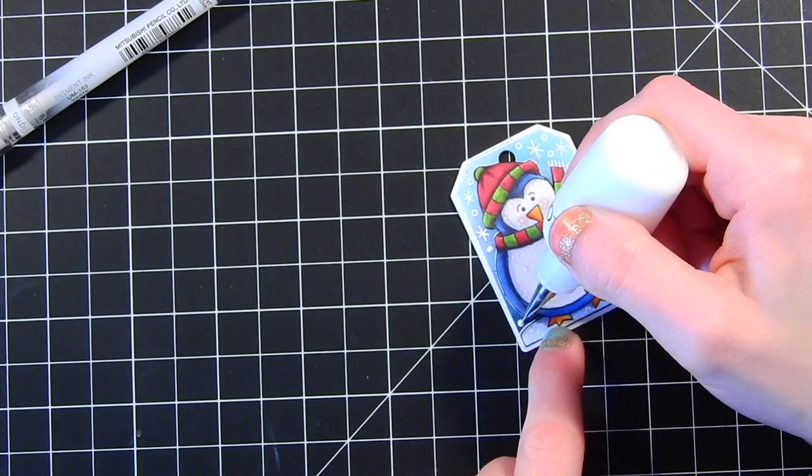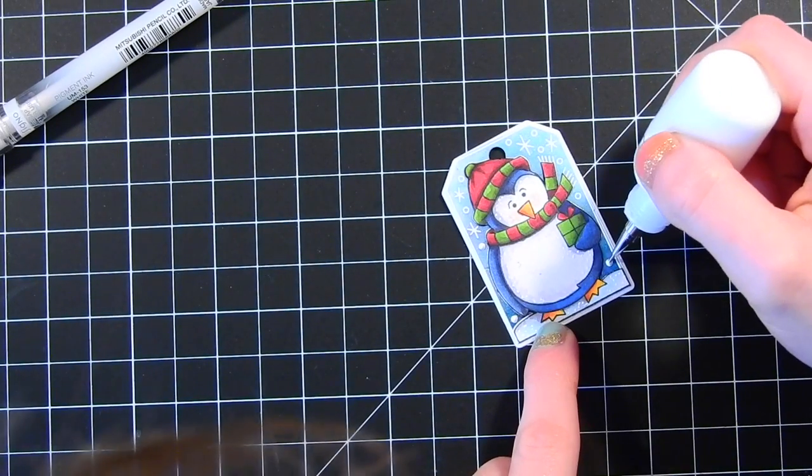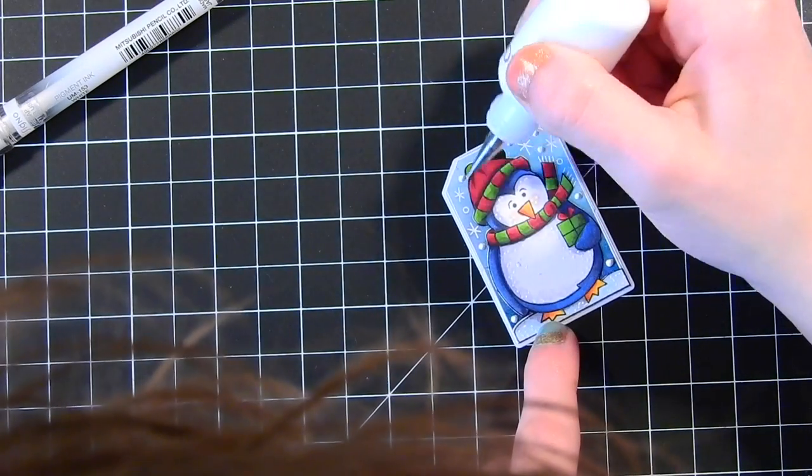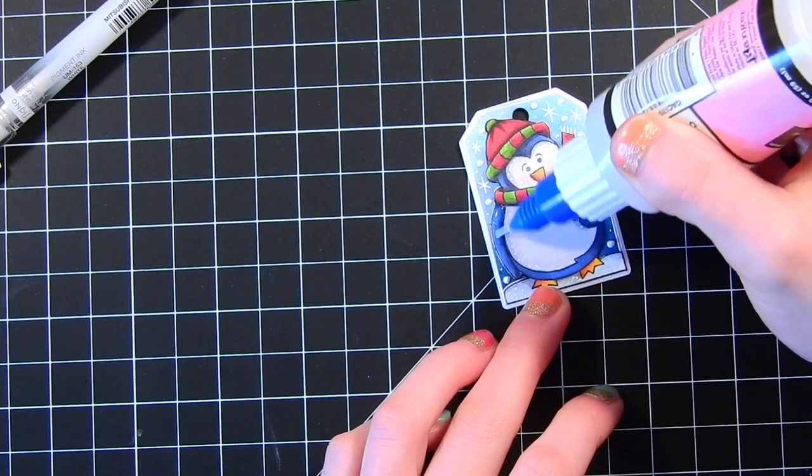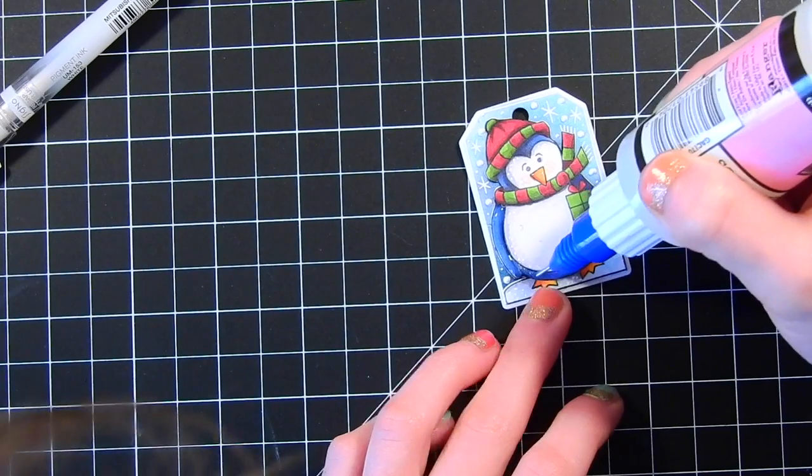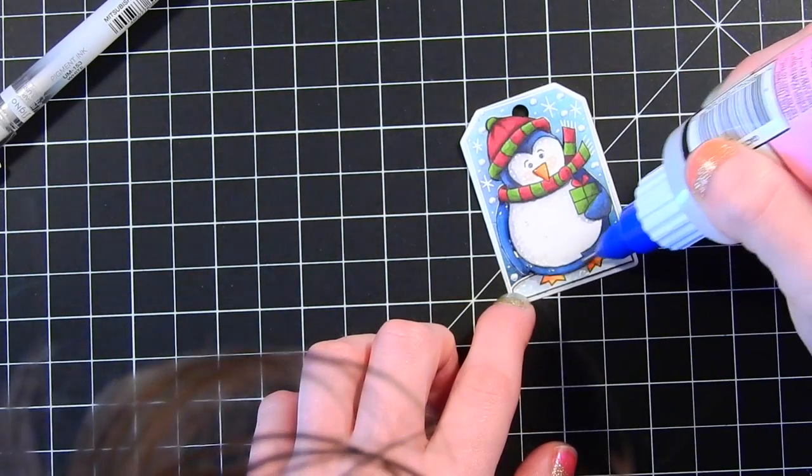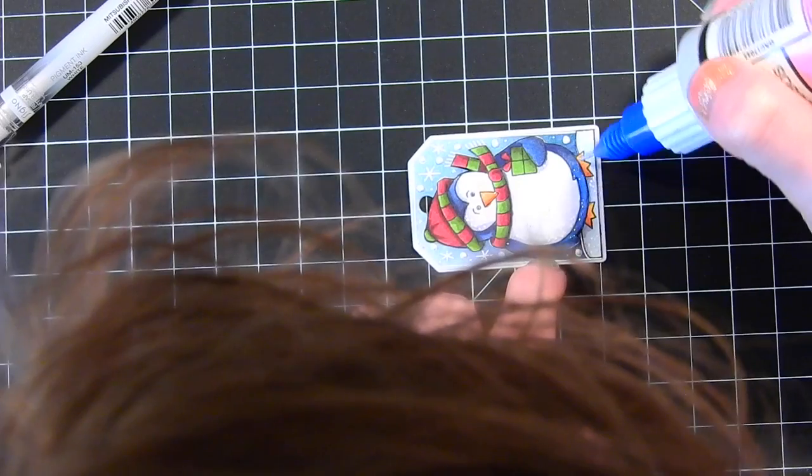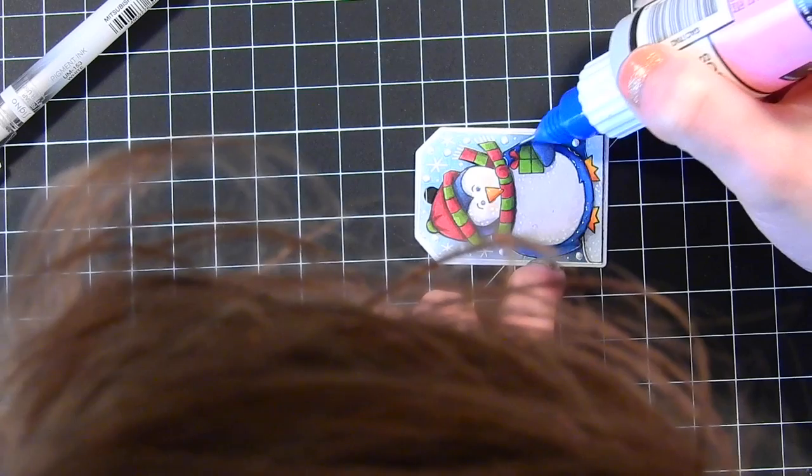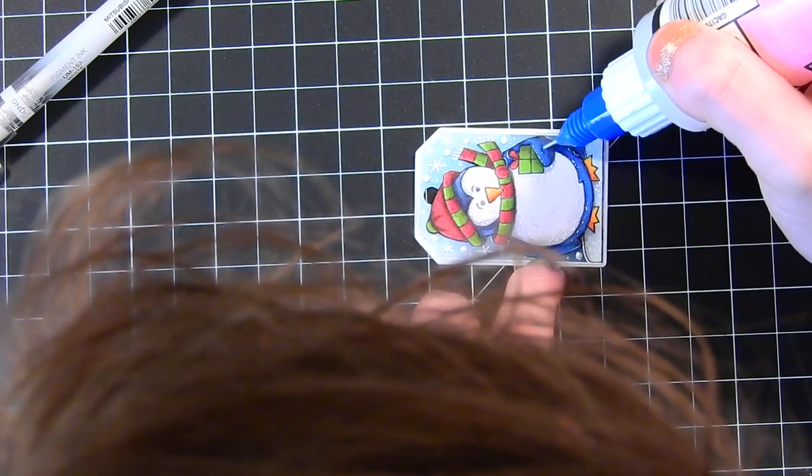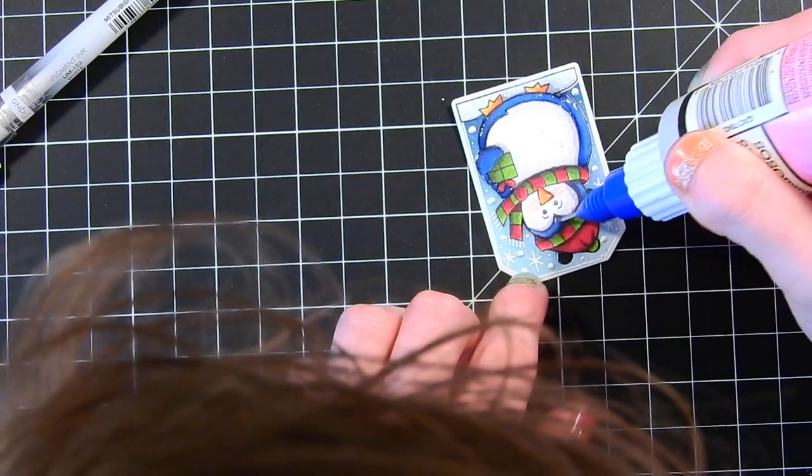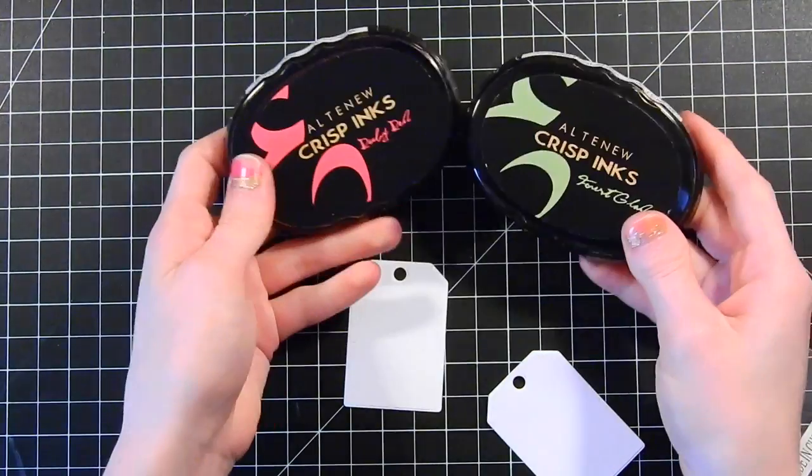With some glossy accents I'm applying this over top of the penguin's body. This will help give him some dimension and some shine, it'll catch the light and add some really nice glimmer to the tag without getting too sparkly. With the fine tip of this bottle it also helps to make sure you get into all those nooks and crannies, it's really really helpful.